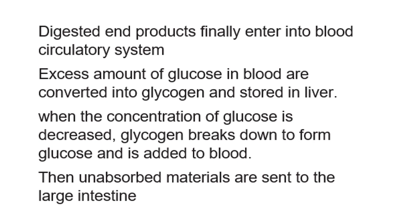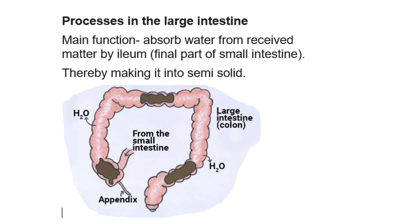Fatty acids and glycerol are not directly absorbed into the bloodstream — they are first absorbed by lacteals and then enter the bloodstream. The main function of the large intestine is to absorb water from the material received from the small intestine. Once water is absorbed, the undigested material becomes solid and is released from the body as feces. This concludes our discussion of the digestive system. Next we will discuss diseases related to the digestive system. Thank you and goodbye.